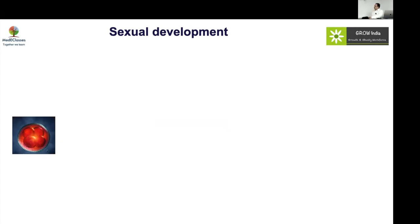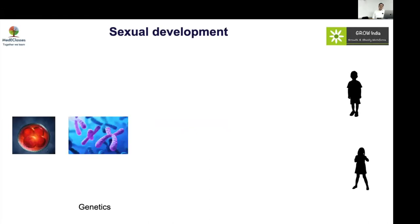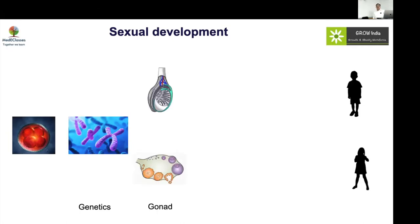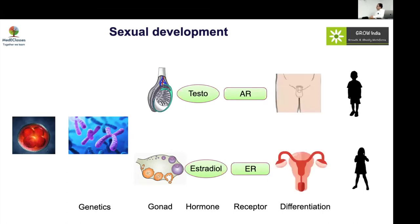Now, discussing the fundamentals of sexual development: all of us start from a unicellular stage, which is gender non-dimorphic. From there, multiple steps of differentiation occur — the first is genetics, which determines the initial phase; then development of the gonads (testis or ovary); then production of hormones testosterone and estrogen, which act on their receptors; and finally development of gender identity. Each and every step can be defective.